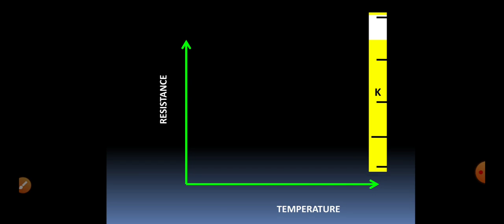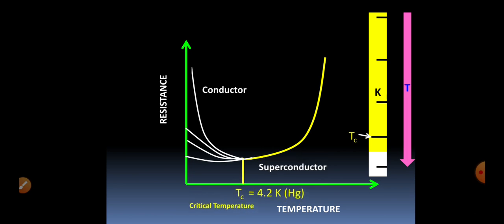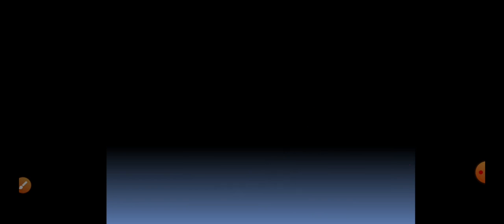Let's see how conductors and superconductors behave differently as temperature decreases. With decrease in temperature, different conductors show various curves in which resistance is never equal to zero. But in the case of a superconductor, when temperature reaches the critical temperature, the superconducting material shows no resistance — it becomes equal to zero.